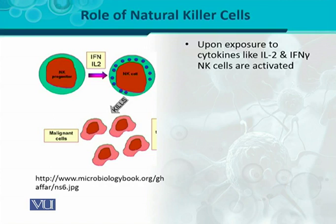Where do IL-2 and interferon come from? IL-2 and interferon are produced by TH cells — helper T cells. This means that helper T cells are also going to help NK cells. Helper T cells help NK cells by providing cytokines like IL-2 and interferon, assisting NK cells in their activation.